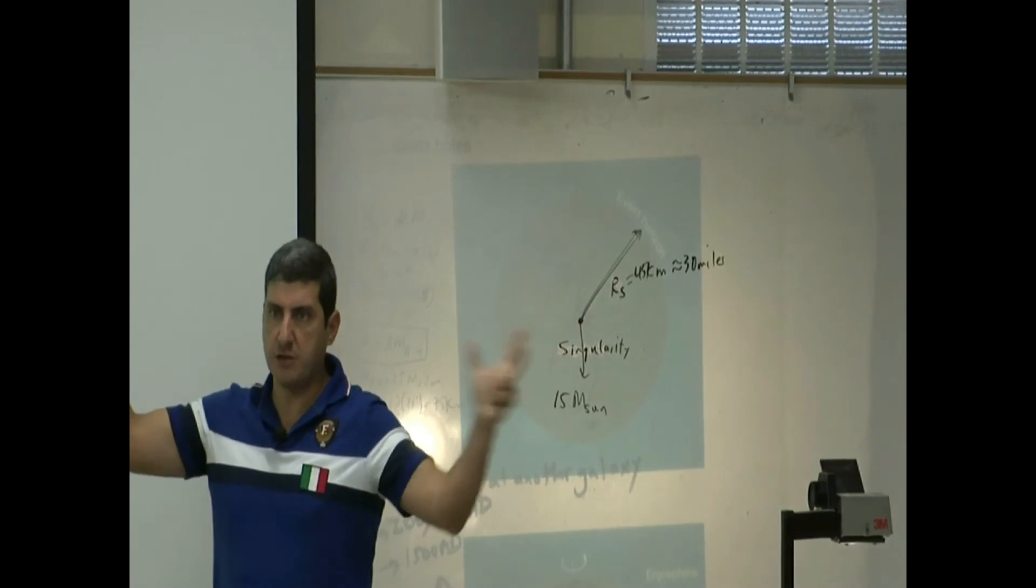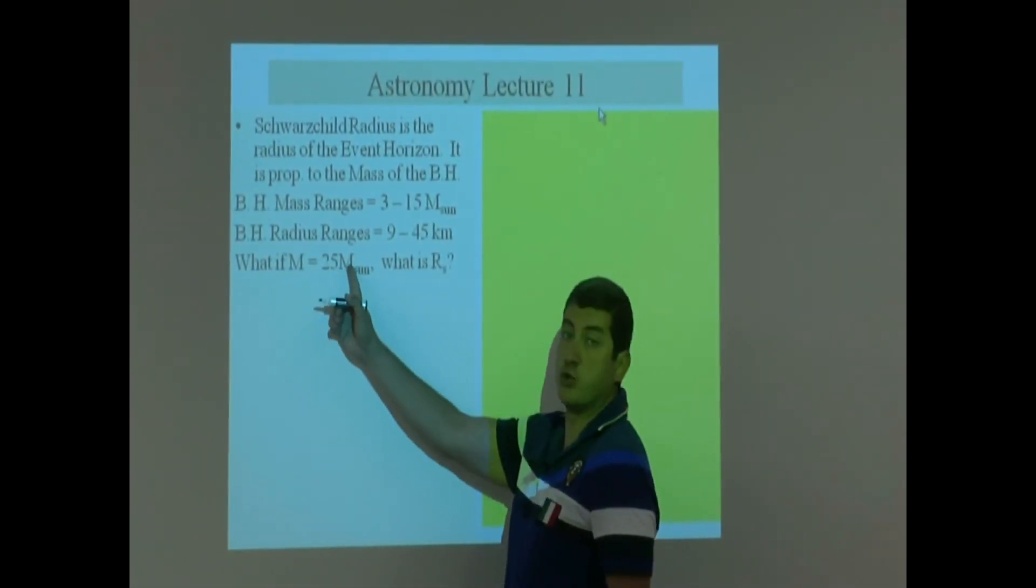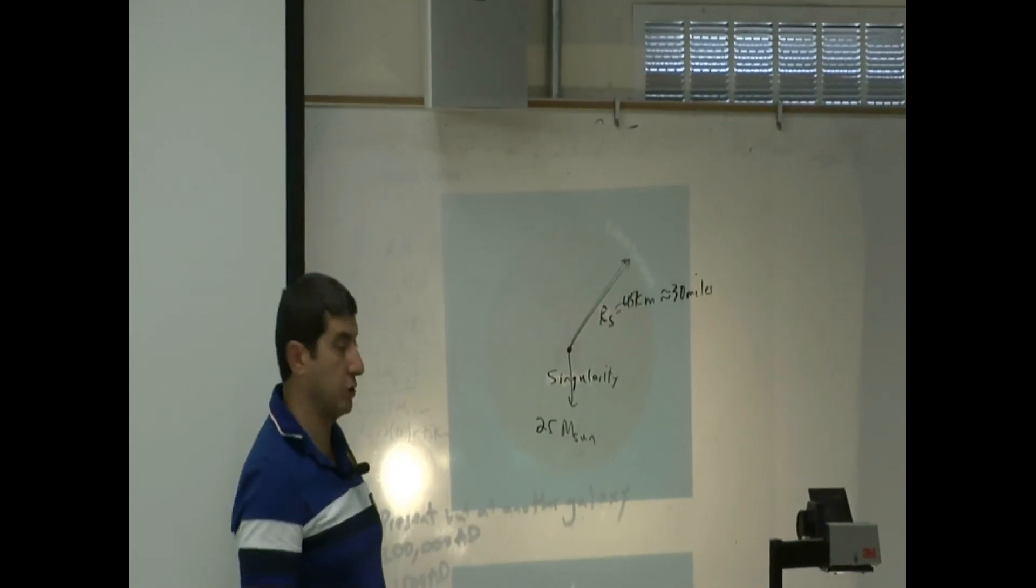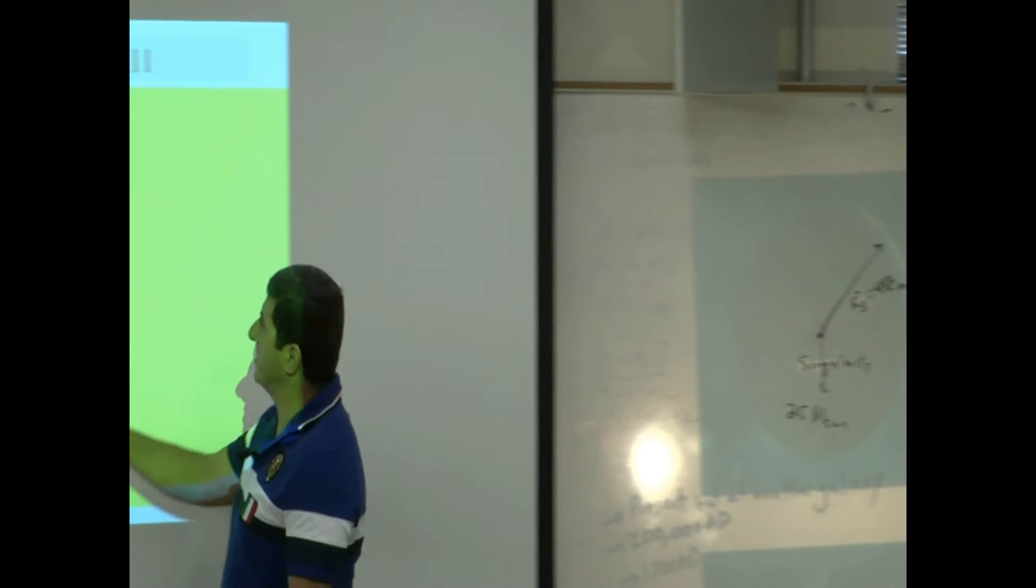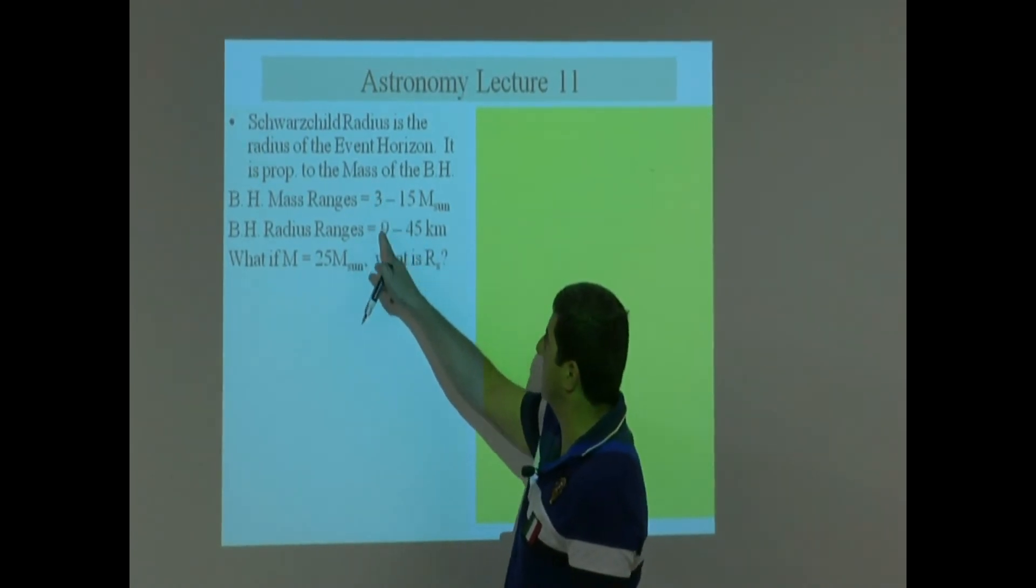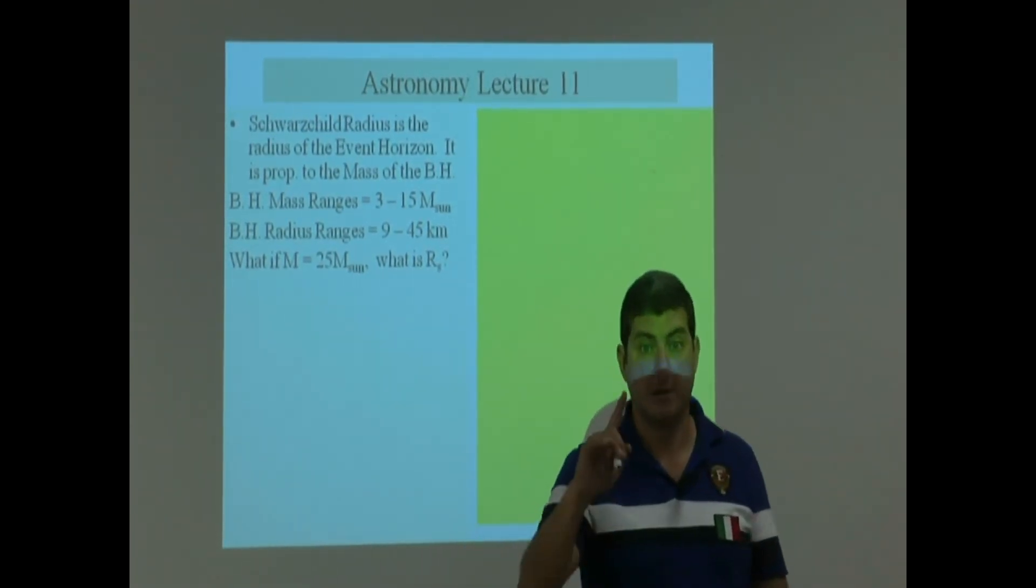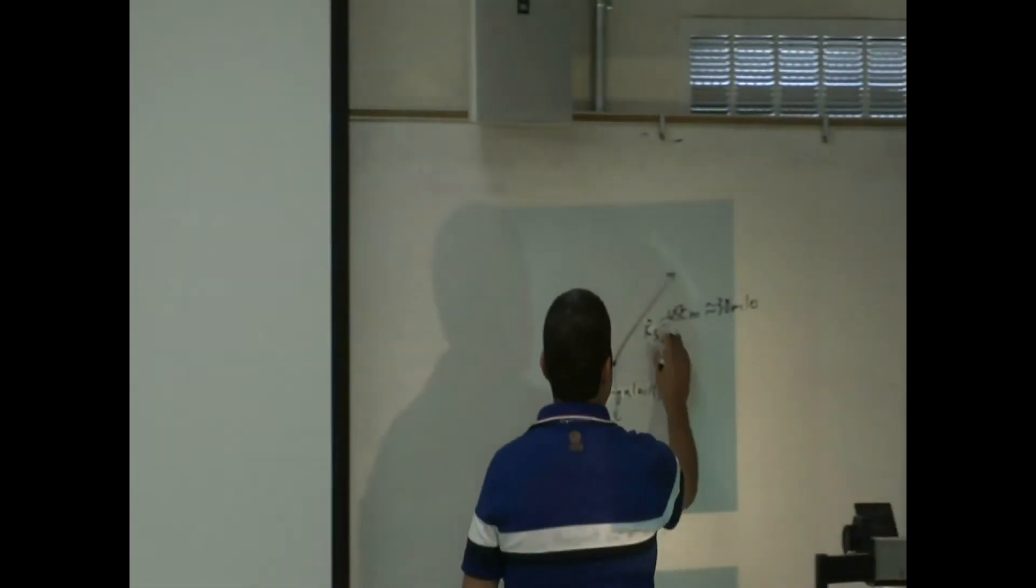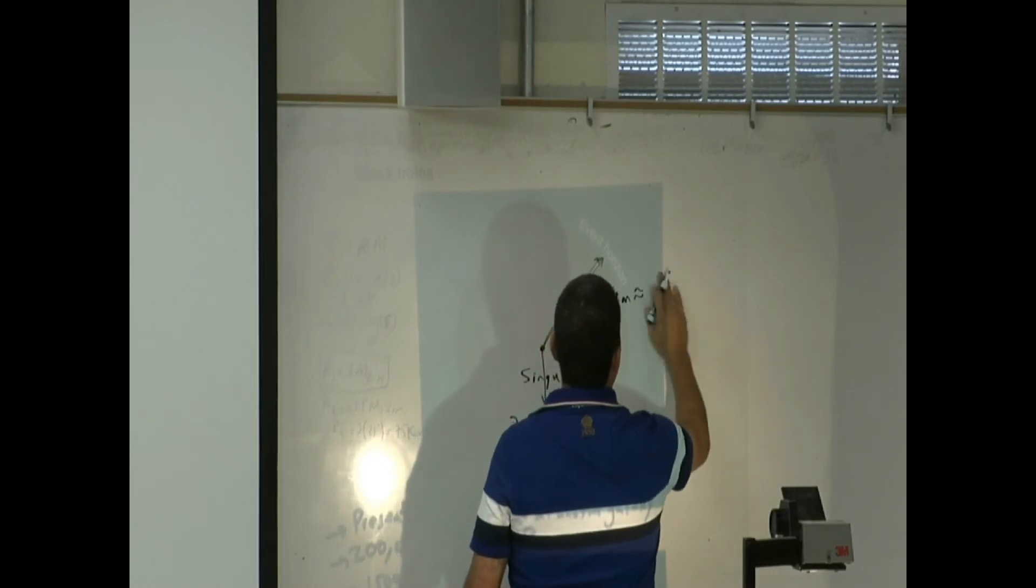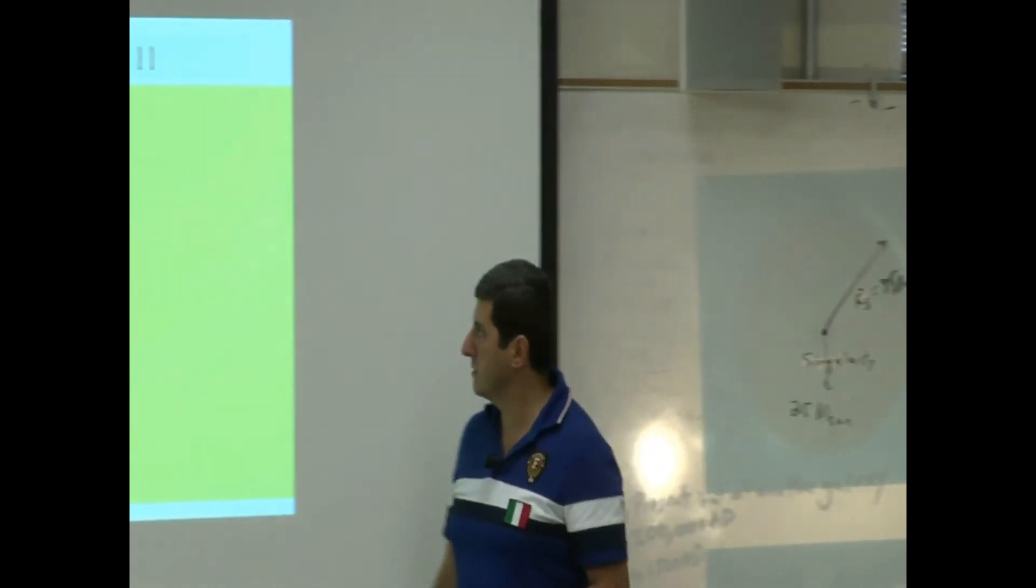So you notice that if it's heavier, the radius is going to be bigger. And then we can ask a question. What if you had a 25 solar mass black hole? What is this radius going to be? It should be bigger than 45, right? Well, what pattern do we notice here? Three solar mass is nine. Fifteen solar mass is 45. It looks pretty linear. If you multiply this three by three, you get nine. If you multiply 15 by three, you get 45. Twenty-five solar mass black hole should be 25 times three, 75. So if it's 25 solar mass black hole, it should be about 75 kilometers, which is about 48, 49 miles. So let's just say approximately 50 miles.